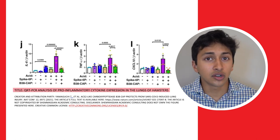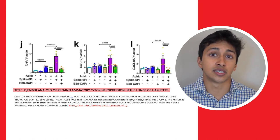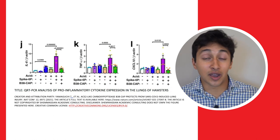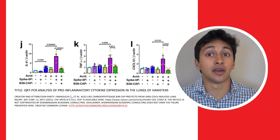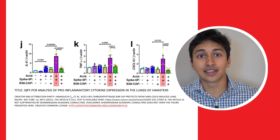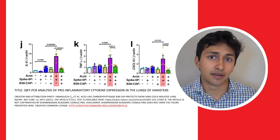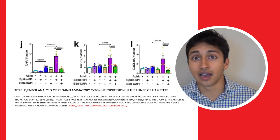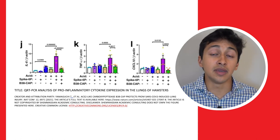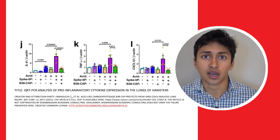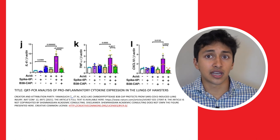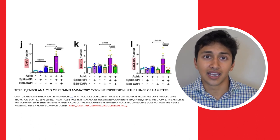Applying the TABE-P method: the title tells us we're looking at RT-qPCR analysis of pro-inflammatory cytokine expression in the lungs of hamsters under certain conditions. The x-axis has several sets of independent variables denoted by plus and minus signs — for example, looking at the tall purple bar in all three graphs, we see that the conditions are acid positive, spike 6P positive, and B38 cap negative. The passage would provide more information on what exactly these variables mean. We're looking at the mRNA expression of several pro-inflammatory cytokines relative to a control: IL-6, TNF-alpha, and CXCL-10.